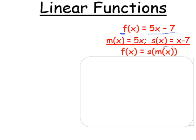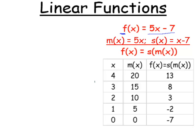So, we get 5x minus 7 is the composition of s with the function m. So, first do m, then do s. Here's a table for a number of values, starting with 4 and going down to 0.